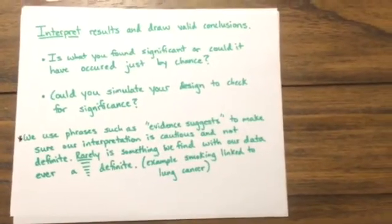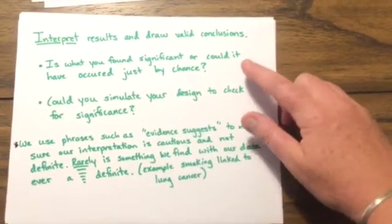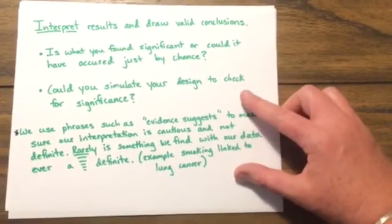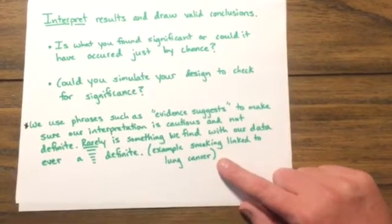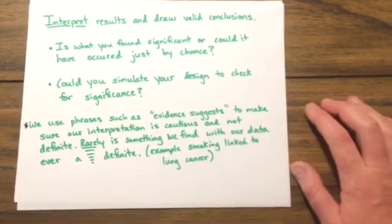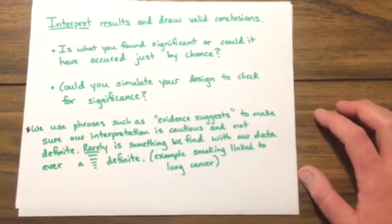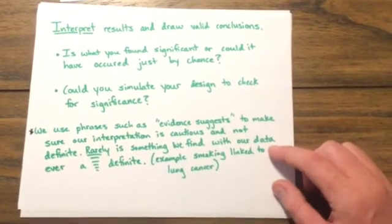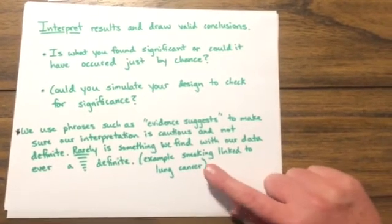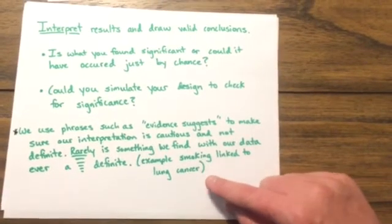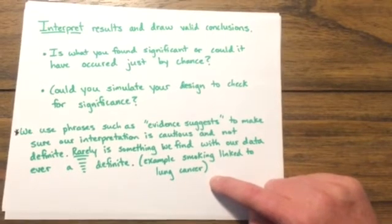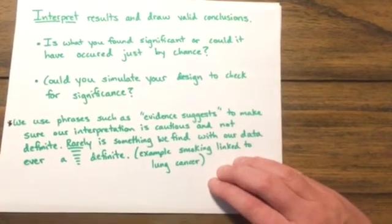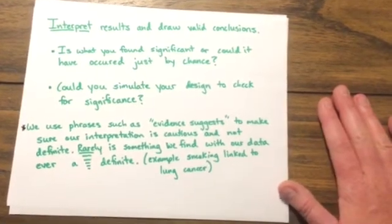The fourth phase is to interpret your results and draw valid conclusions. Ask whether what you found is significant or could it have occurred just by chance. Could you simulate your design to check for that significance? We use phrases such as 'evidence suggests' to make sure our interpretation is cautious and not definite. Rarely — and I underline that — rarely is something we find with our data ever a definite. A strong example: with smoking, it's only in recent years that they're really talking about it being directly related to lung cancer, and even with all the evidence gathered over all these years, they still don't say it's directly a cause, because there are so many other outside factors.